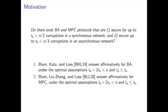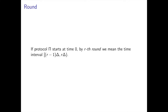The threshold condition is that the number of corruptions when the network is asynchronous plus two times the number of corruptions when the network is synchronous must be less than n, and the number of asynchronous corruptions must be at most the number of synchronous corruptions. Round complexity — the number of rounds required by a protocol to terminate — is used as a measure of efficiency, and our goal is to improve the round efficiency of known BA and MPC protocols in this hybrid realm.